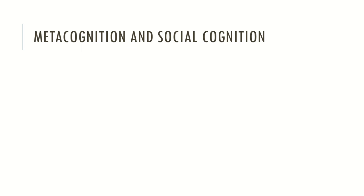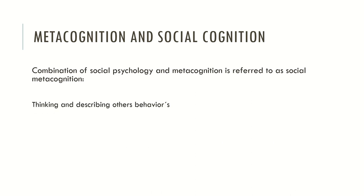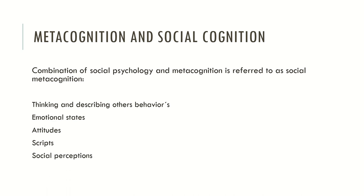The combination of social psychology and metacognition is referred to as social cognition, where we describe thinking about and describing others' behaviors, emotional states, attitudes, or self-attitudes. Another concept used in social cognition is life scripts — the things we do that are described in our mind with a script framework. Just like going to a restaurant: I ask the person what the menu is for today, then I sit at the table and start to eat. This is an example of a social script. Metacognition and social cognition are also applied to study social perceptions and cultural beliefs.